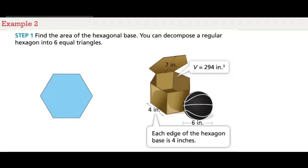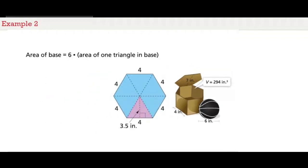Step one is to find the area of the hexagonal base. You can decompose a regular hexagon into 6 equal triangles. Each edge of the hexagon base is 4 inches. The height of the triangular base is about 3.5 inches. So we will use the formula area of the base is equal to 6 times the area of one triangle. We substitute 4 for the base and 3.5 for the height. And we get the area of the base which is about 42 square inches.